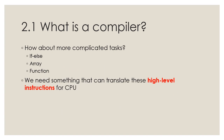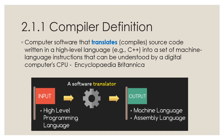A CPU can do very basic tasks, but what about instructions that are more complicated such as if-else, array, or a function itself? Therefore, there must be something in the middle that is able to translate this high-level instruction into basic instructions that a CPU can execute. That something is a compiler.